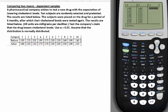That's the company's claim that the drug lowers cholesterol levels. Use alpha equals 0.01, assume that the distribution is normally distributed. So, here's the first step that you have to do.